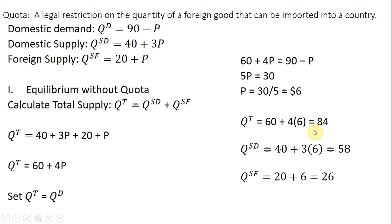How much of this will be coming from domestic suppliers, plug this $6 into the domestic supply equation. And we'll see that domestic suppliers will be bringing 58 units to the market.